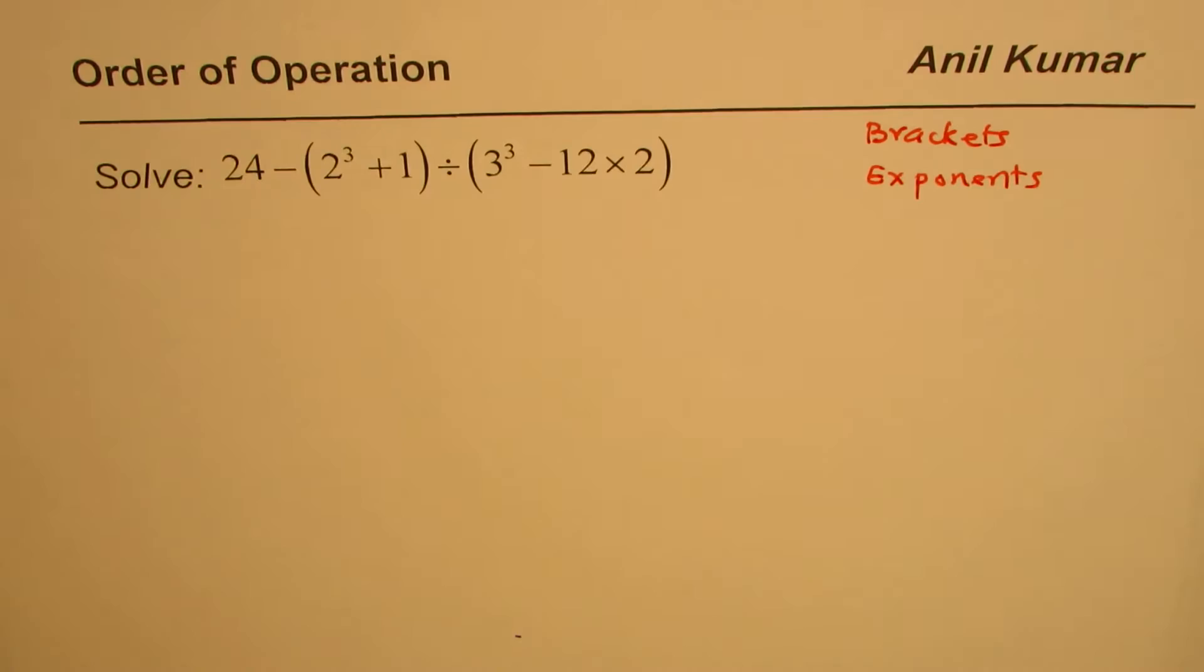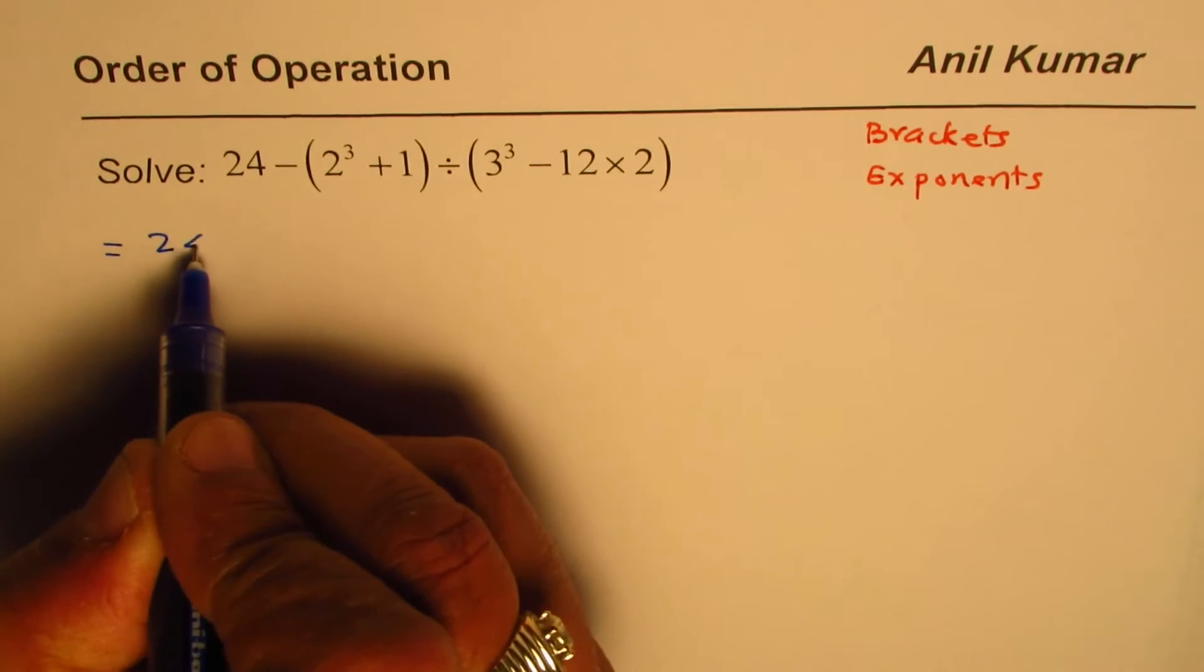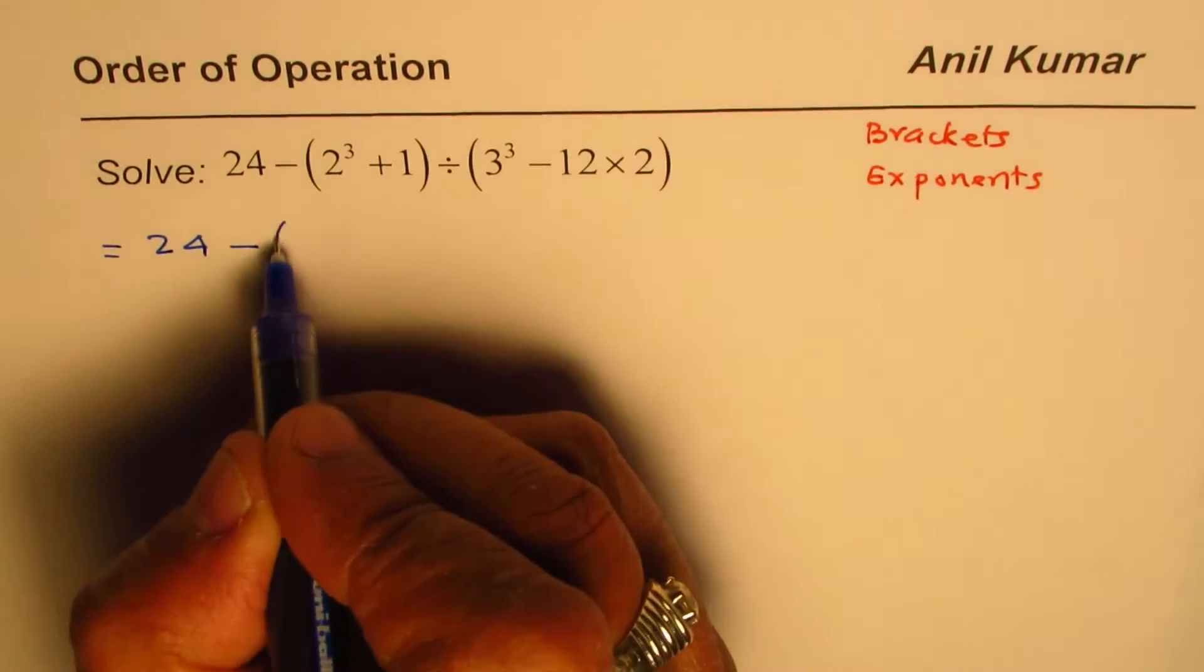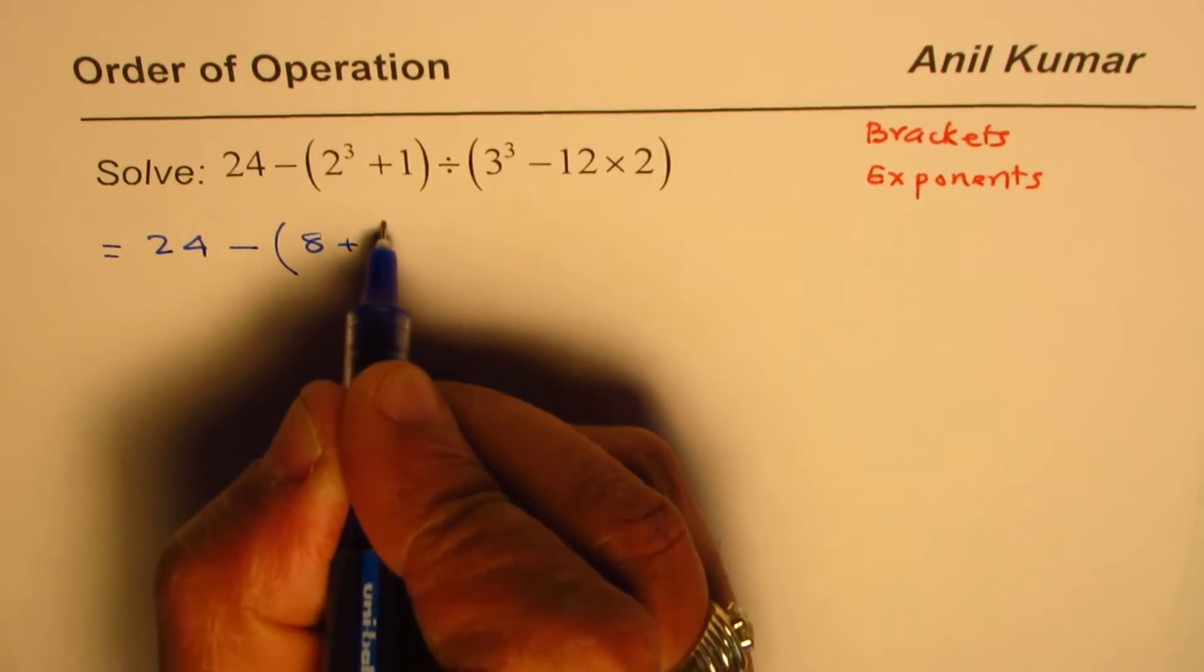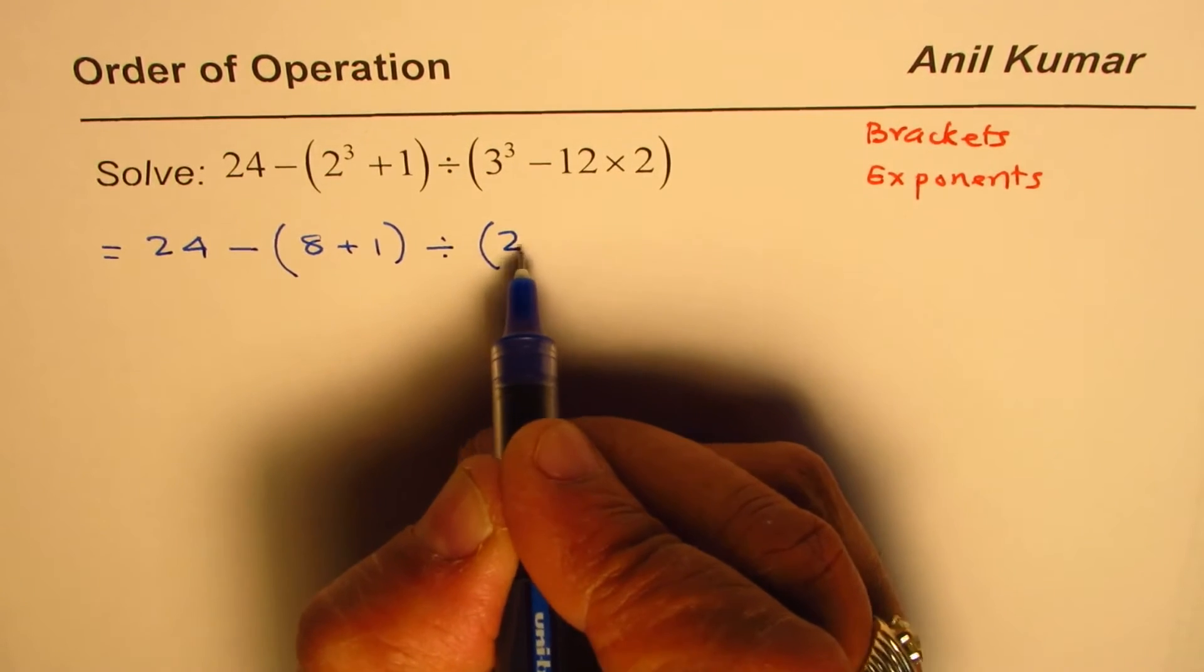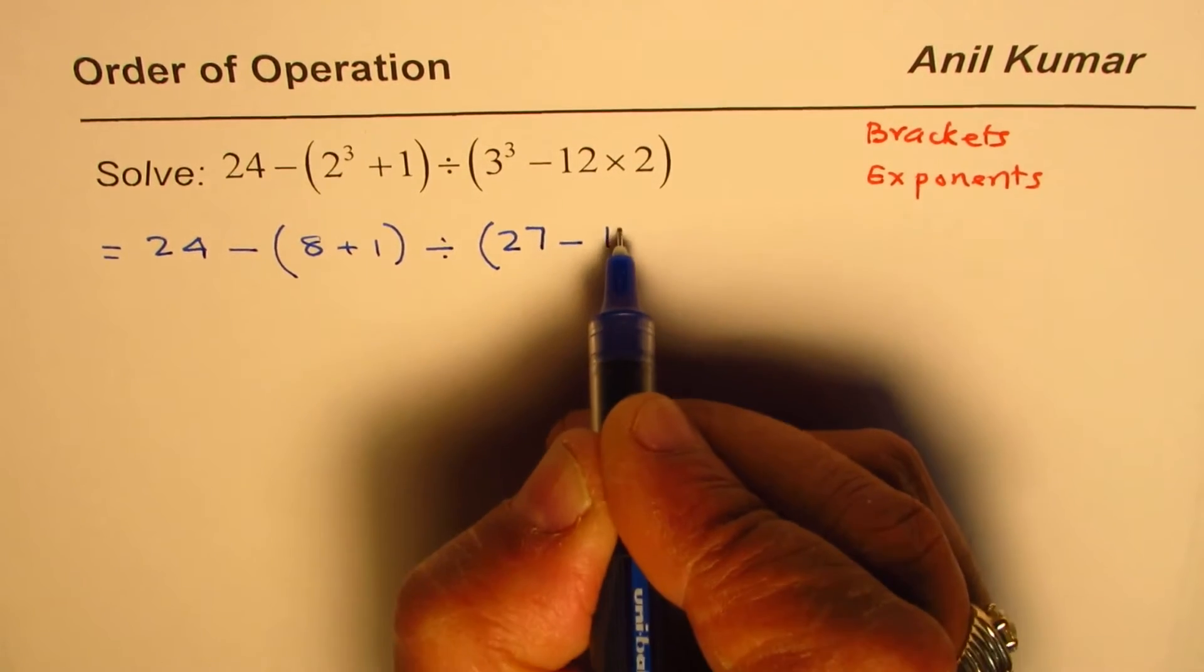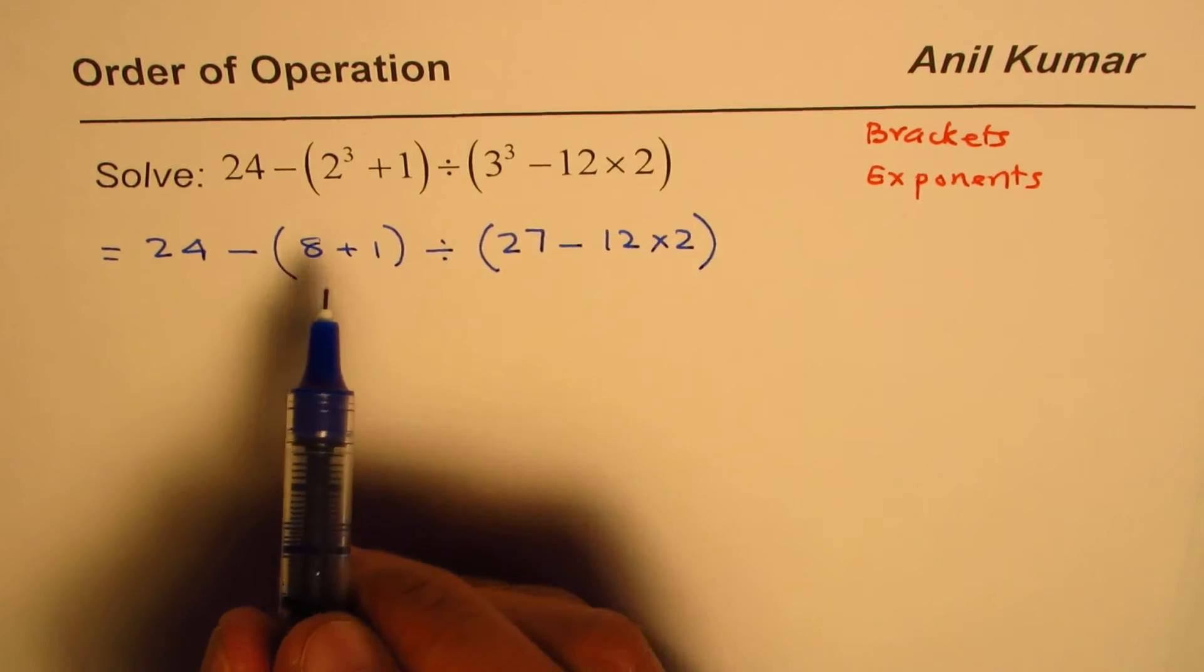Let's follow these steps. We concentrate on these two brackets first, so we could write this expression as 24 minus, within the brackets 2 cube is 8, so we can write 8 plus 1, divided by, within this bracket 3 cube is 27, so 27 minus 12 times 2. We have taken care of exponents which are inside the brackets.